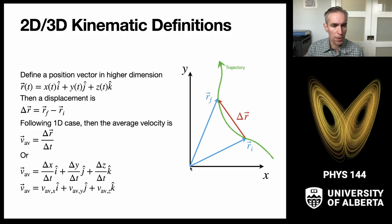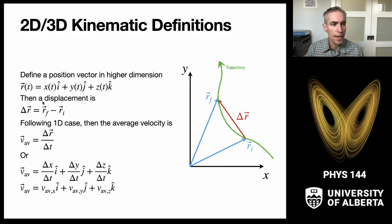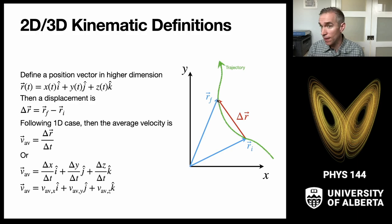We can think about the particle at two different points along this green trajectory curve. The position initially would be the vector from the origin of our coordinate system out to where the particle is at initially, then where it goes in the final position along the trajectory. A displacement vector is just the final minus the initial in a vector sense — it's the vector you add to the initial position to get to the final position.